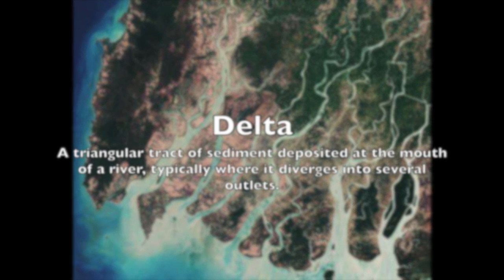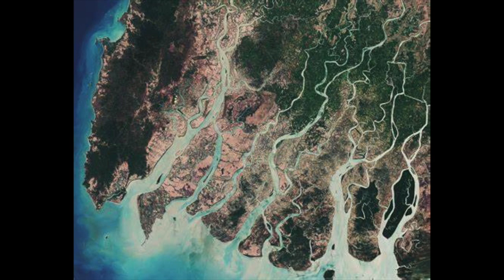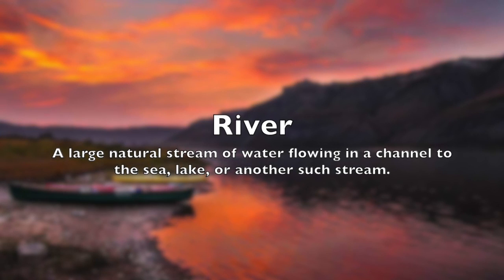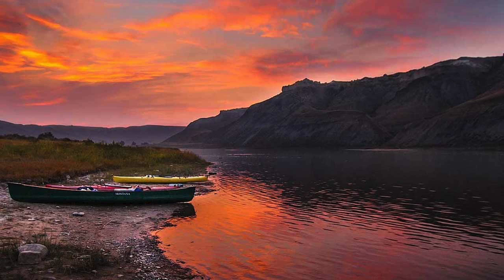Delta: a triangular tract of sediment deposited at the mouth of a river, typically where it diverges into several outlets. River: a large natural stream of water flowing in a channel to the sea, a lake, or another such stream.